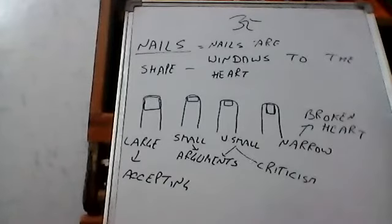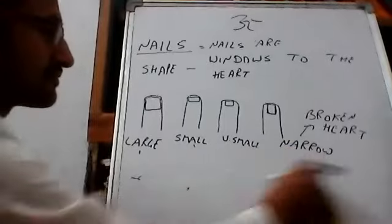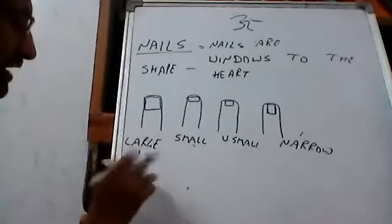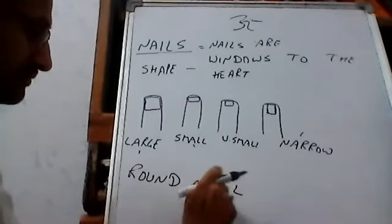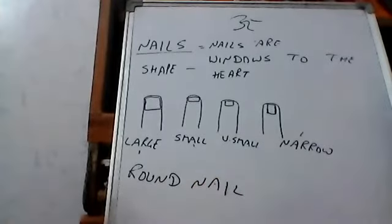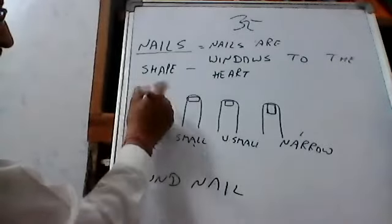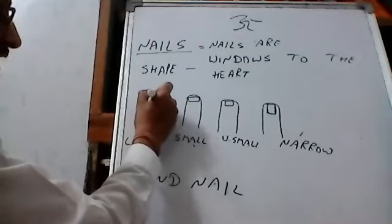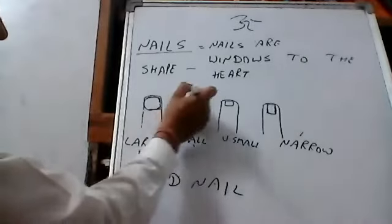There is another kind of nail, which is an add-on. It is not the fifth kind of nail, it is a round nail. Round nail means not exact circle. Any of these four can be round.